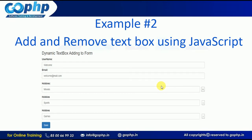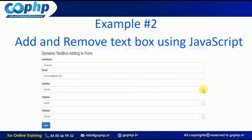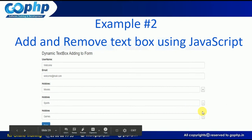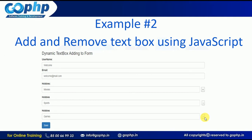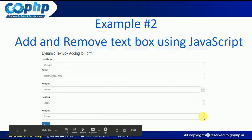In this session we are going to discuss an example of how to add and remove a text box to a form using JavaScript. We have an Add button — if you click it, a text box should be added: Hobbies 1, Hobbies 2, Hobbies 3, and so on. For every text box there is also a minus button. Plus means adding, minus means removing.